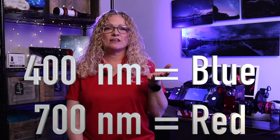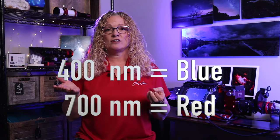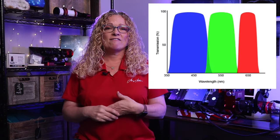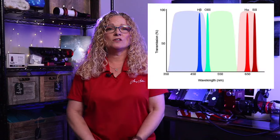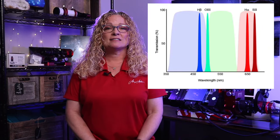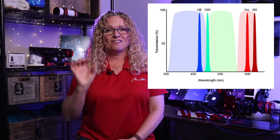Narrowband is said to have narrow bandpasses, hence the name narrowband. The bandpass is how much of the spectrum the filter allows to pass, and this is measured in nanometers, or nm for short. The entire visual spectrum runs approximately from a wavelength of about 400 nanometers, which is blue, to 700 nanometers, which is red. So typically an RGB filter might have a bandpass of about 100 nanometers. In contrast, a typical narrowband filter has a bandpass of just three to five nanometers — very narrow.